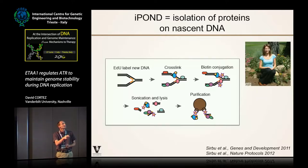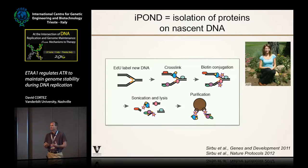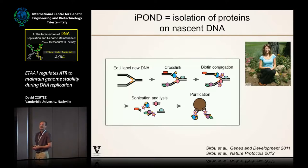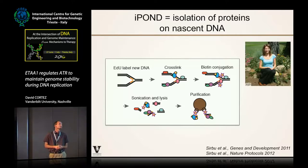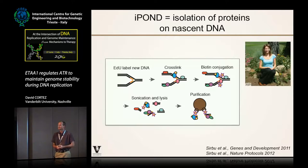A student, Bianca Sirbu, developed this method, iPOND, which most of you are aware of. It's a very nice method to purify proteins enriched near replication forks on the nascent DNA. I will point out that it has some limitations: you have to use short pulse times, otherwise you might as well just do chromatin fractionation. You should also be doing pulse chases to really understand where your proteins are. Finally, it's also an ensemble method, so all we see is an average of what might be going on — we can't look at any single event.